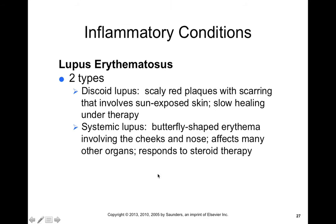Other inflammatory conditions include lupus. Systemic lupus erythematosus (SLE) is the one that has a butterfly-shaped rash. This differs from discoid lupus, which shows scaly red plaques with scarring that involves sun-exposed skin; it's more slow to heal under therapy and has more circular types of rashes. Whereas systemic lupus has more of a butterfly-shaped rash on the cheeks and nose. It affects other organs as well, including the central nervous system and joints, but it responds fairly well to steroid therapy because it is an autoimmune disease — essentially you want to help reduce that inflammation.